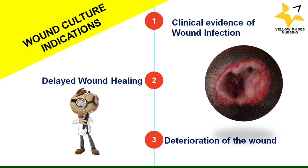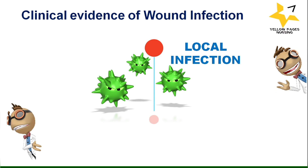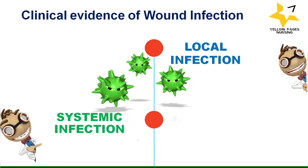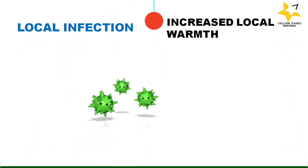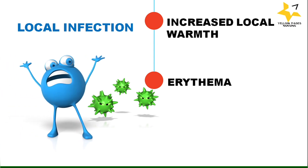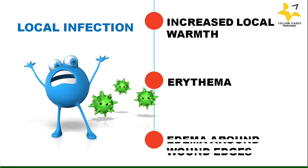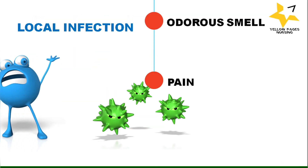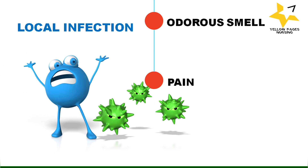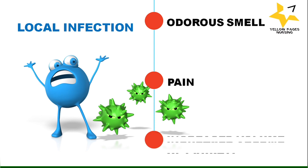Let's discuss clinical evidence of wound infection, starting with local infection. It is evidenced by increased local warmth when touched, erythema (redness) where periwound erythema is present for two centimeters or more, edema around the wound edges also covering two centimeters or more, odorous smell even after cleaning the wound, onset of wound pain gradually increasing, and increased volume of exudate.